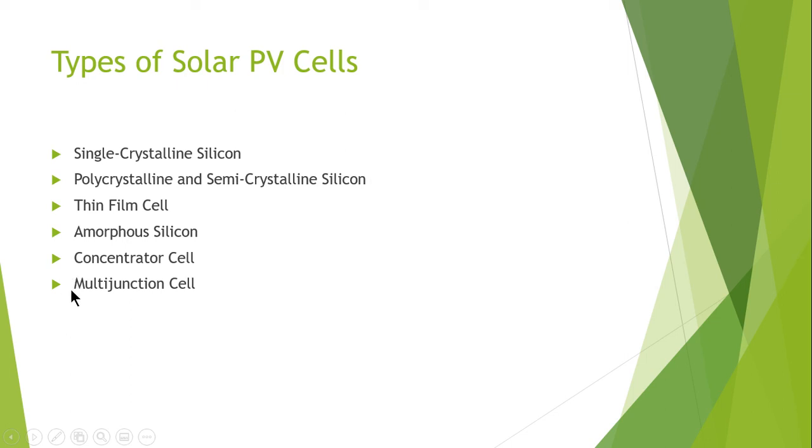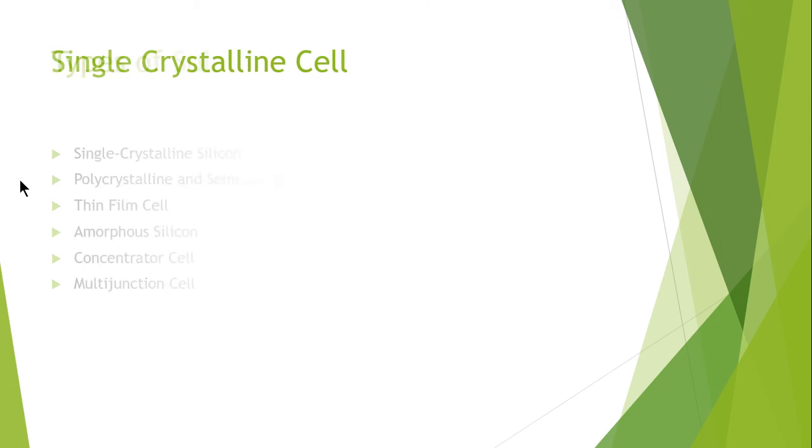The next types are thin film cell, amorphous silicon, concentrator cell, and multi-junction cell. Basically the type of solar cell that is defined majorly depends upon the structure of the silicon being used in the photovoltaic cell.